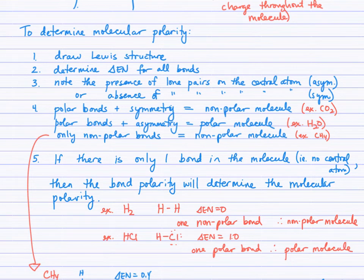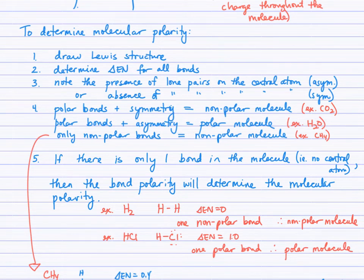CH4 is an example — it has very weakly polar C-H bonds, essentially 0.4, which we can consider nonpolar. If there happens to be only one bond in the molecule, then that bond polarity determines the molecular polarity. So H2 is a nonpolar molecule, and HCl is a polar molecule, as determined by the polarity of the single bond in each.